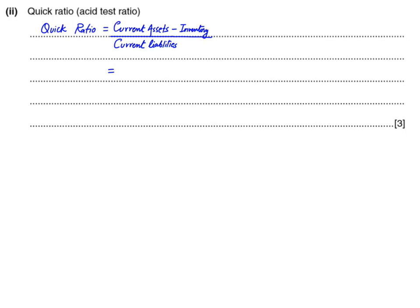This is easily understood during the pandemic because most businesses are closed or locked down and unable to move inventory fast as there are very few customers. Current assets are 66,000 and deducting closing inventory of 50,000 leaves 16,000 of quick assets. Dividing 16,000 by current liabilities of 60,000 gives 0.26-something, which rounds to 0.27. Adding ratio 1: 0.27:1 means for each dollar of current liability we have quick assets of 0.27.